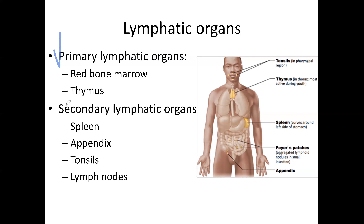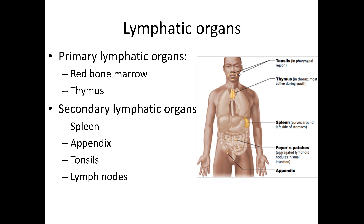Secondary organs include the spleen, appendix, tonsils, and lymph nodes. The spleen is located on the left side, to the left of the stomach. The appendix is attached at the beginning of the large intestine called the cecum. Tonsils are found in the pharyngeal region — the pharynx is your throat. Lymph nodes are distributed throughout the entire body, with a large concentration in the axillary and inguinal regions.